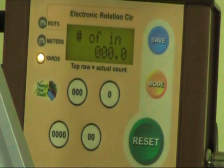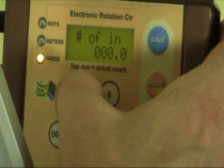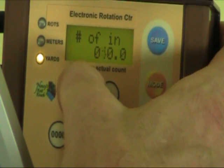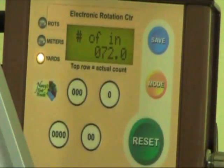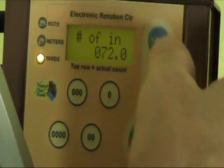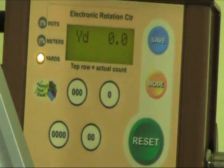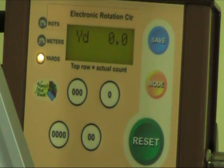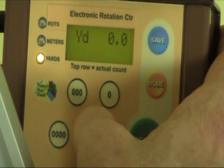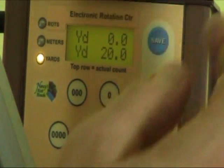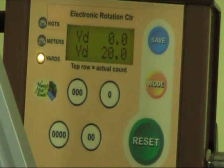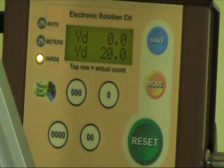We'll go back to the yards mode, and I'm going to enter 72, as if we're making a two-yard skein. I'm going to save that quantity. So now the computer knows that every rotation that it counts is equal to 72 inches, or two yards. And we'll set our target at 20 yards. And you'll be able to see the accumulation of the yardage there as we wind the yarn.